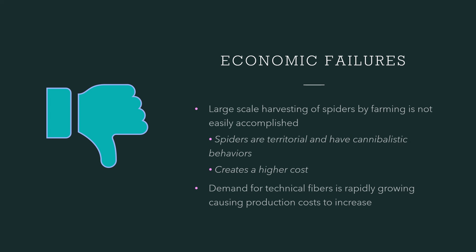Economic Challenges: The topic of mass production has been previously touched on when cloning identical spider silk strands, but there is another topic regarding mass production of spiders. Large-scale harvesting of spiders by farming is not easily accomplished. Spiders are territorial and have cannibalistic behaviors, which causes trouble when trying to farm them because the spiders would have to be separated individually, thus causing higher costs and driving further research into silk cloning.